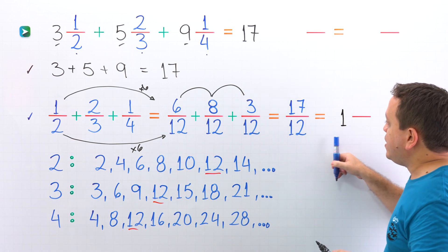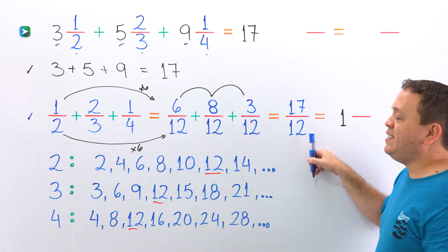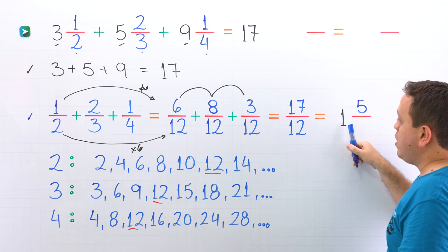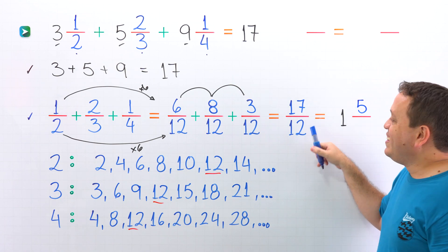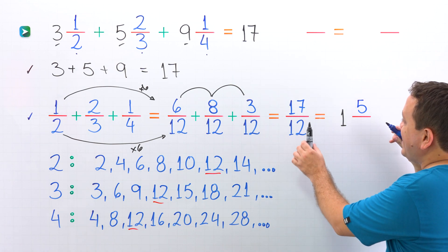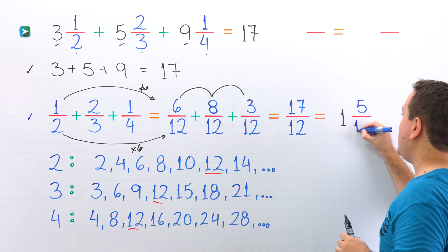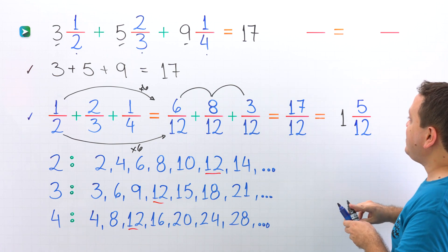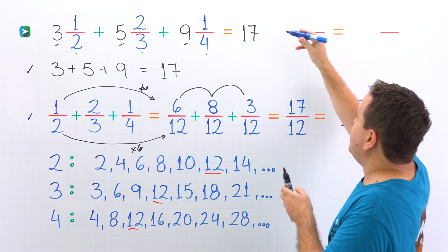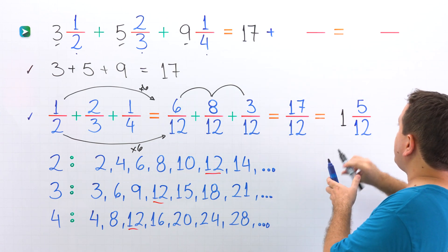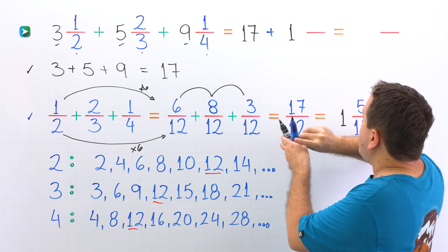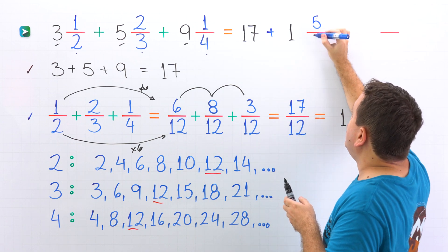Then we multiply: one times twelve is twelve. To get seventeen, we need to add five. The denominator stays the same — twelve. Lastly, we add one and five twelfths to seventeen, giving us seventeen plus one and five twelfths.